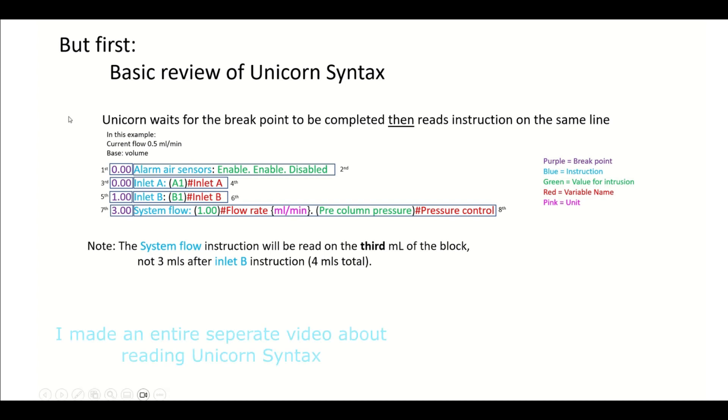In this example, we want to understand that unicorn waits for the breakpoint to be completed and then after that it reads the instruction on the same line. We're focusing on the purple and the blue. The time at which it's read is in purple, the time or volume at which it's read is in purple, and the instruction itself is in blue. Everything after that is either a variable, a unit, or the name of the variables. Because it says zero here, unicorn is just going to read straight through that and then complete the instruction for the alarm air sensors.